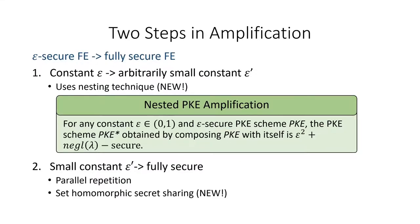The second transformation has a much more complicated construction. As a couple of high-level highlights, we use a pair of parallel repetition, and we also create and use a new form of secret sharing, which we call set homomorphic secret sharing. We had to use this new form of secret sharing since, in our case, the parameters were quite delicate, and other forms of secret sharing were insufficient to provide the parameters we needed for amplification. Unfortunately, in this talk I will not have time to go into more detail about the second transformation or about set homomorphic secret sharing.